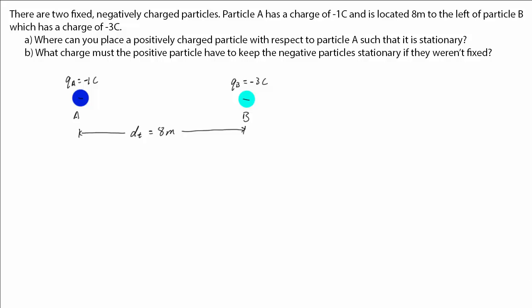Looking at part A, we want to find out where we can place a positive particle such that it will remain still. Newton's first law states that an object will remain at rest or in uniform motion in a straight line unless acted upon by an external force. So if we want a positive particle to be at rest and remain at rest, then we need a net force of 0 to be acting upon it.